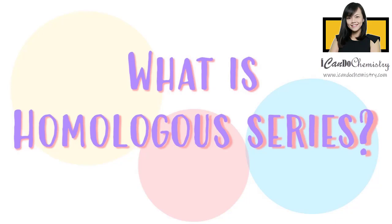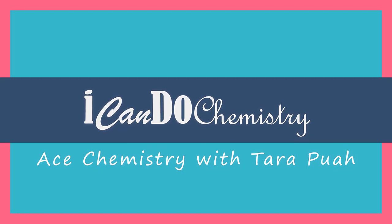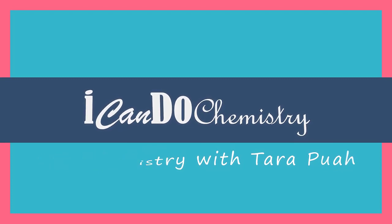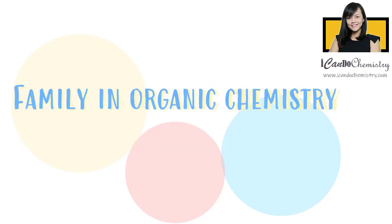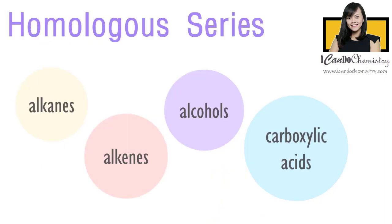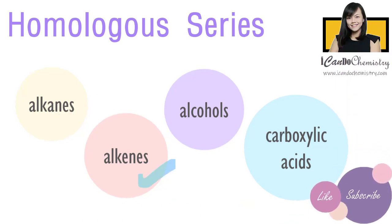In this video, we will focus on homologous series in organic chemistry. A homologous series is a family in organic chemistry. At secondary level, you are to be familiar with the following homologous series: alkanes, alkenes, alcohols, and carboxylic acids.